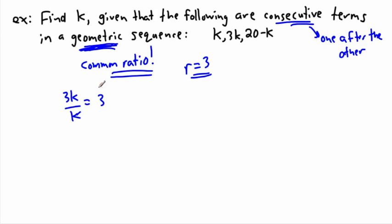That's really helpful. But what else is helpful is this. Let's do the third term divided by the second term to find that common ratio. So 20 minus K divided by 3K.